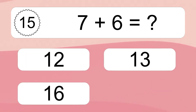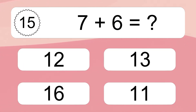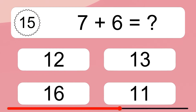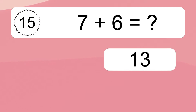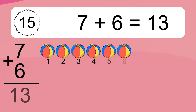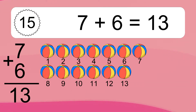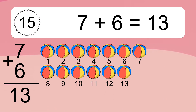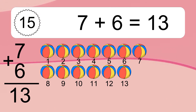7 plus 6 equals what? 7 plus 6 equals 13. Let's count it: 1, 2, 3, 4, 5, 6, 7, 8, 9, 10, 11, 12, 13.